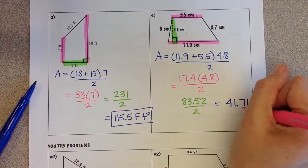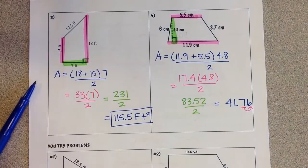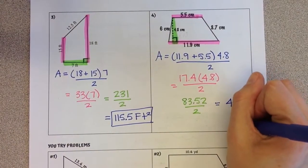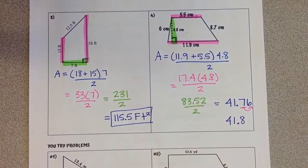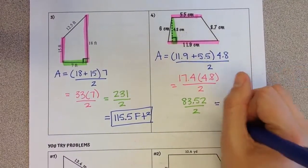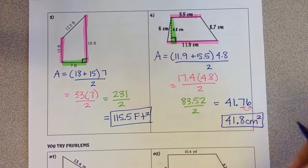I look at my tenths place, I look to the right, the 6 says I need to round up, so the 7 rounds up to an 8, and the 41 stays 41. Our units are centimeters, and area is always squared, so 41.8 centimeters squared.